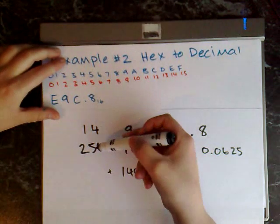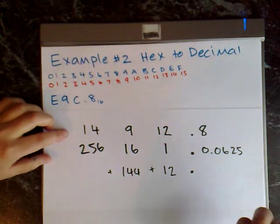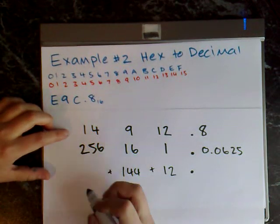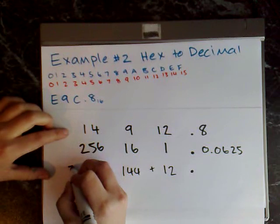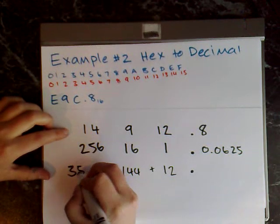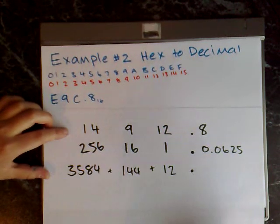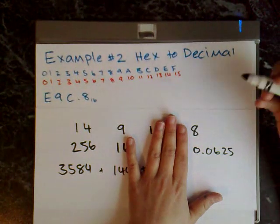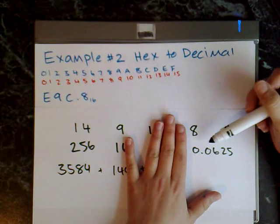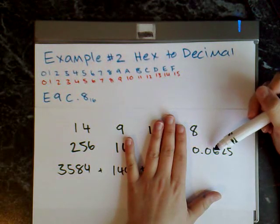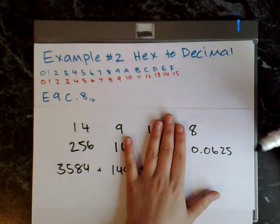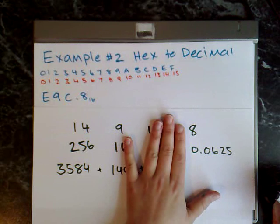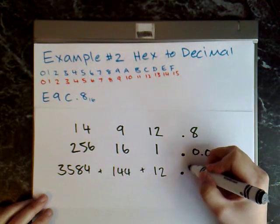Plus 14 times 256, that's 3584. And then again here I cover up the first row of decimals and I say 8 times 0.0625, and that gives me 0.05.